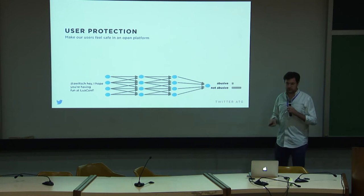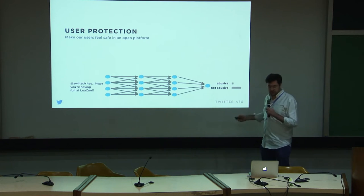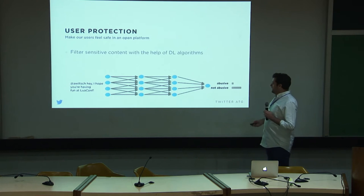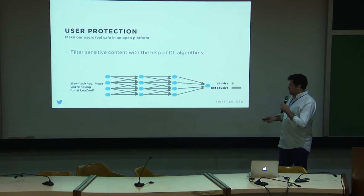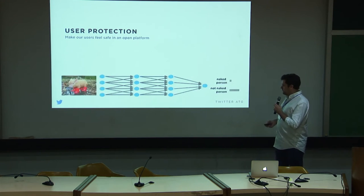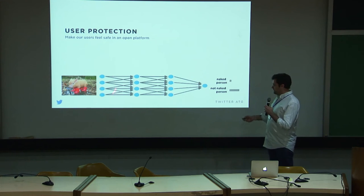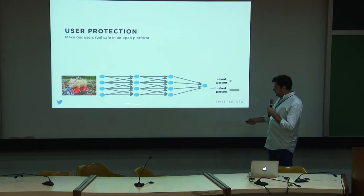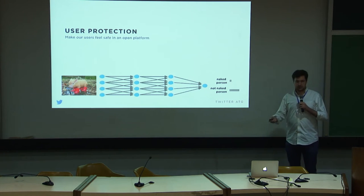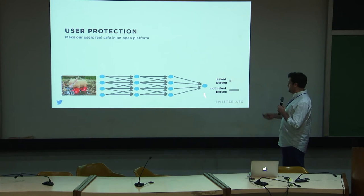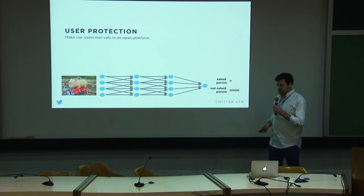We're always trying to filter abusive content on Twitter, and we do the same for images. Here's a picture of a pig with boots on — we pass it through our deep learning stack and discover it's not a naked person, so we can show it to you. This actually turns out to be very crucial to a positive experience on Twitter.